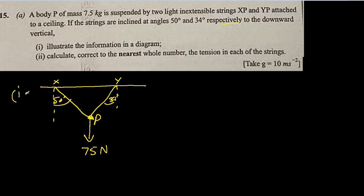Part two: calculate, correct to the nearest whole number, the tensions in each string. Let's give them some labels. This one is t1 and this will be t2, the tension in this wire. There are three forces and nothing is moving, meaning they are in equilibrium. Since they are in equilibrium, we can find them by Lami's theorem.